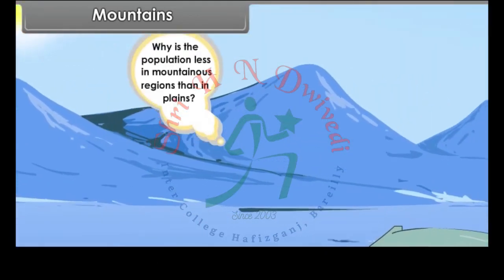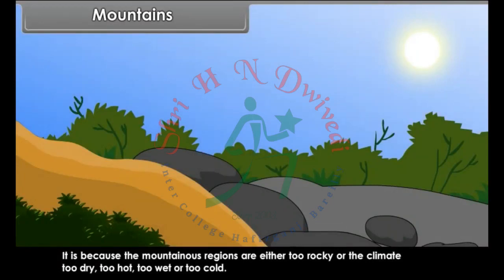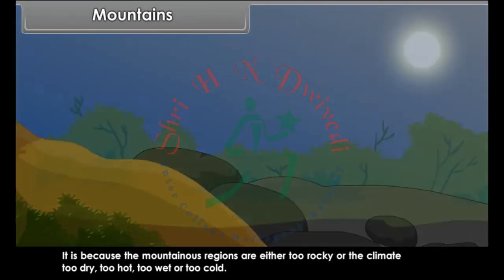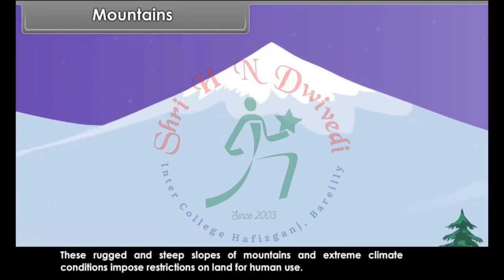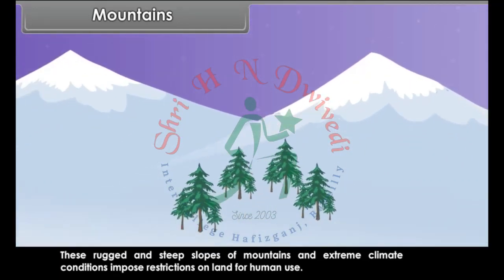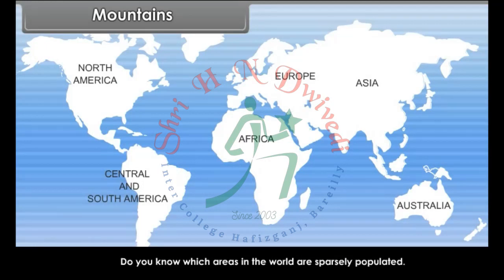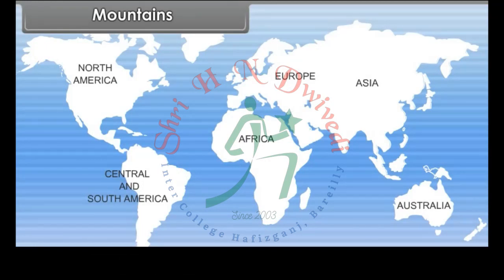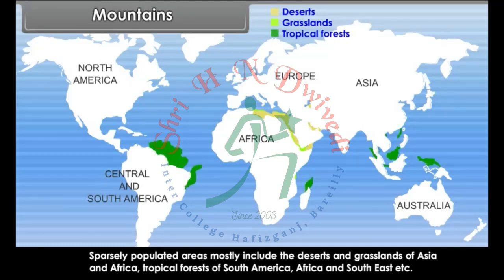Why is the population less in mountainous regions than in plains? It is because the mountainous regions are either too rocky or the climate too dry, too hot, too wet or too cold. These rugged and steep slopes of the mountains and extreme climate conditions impose restrictions on land for human use. Sparsely populated areas mostly include the deserts and grasslands of Asia and Africa, tropical forests of South America, Africa and South East, etc.